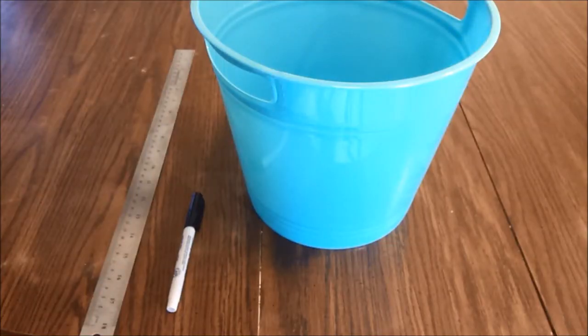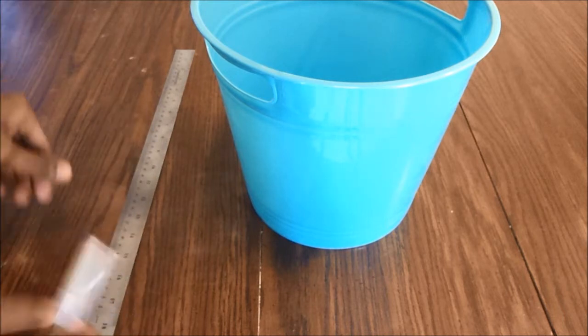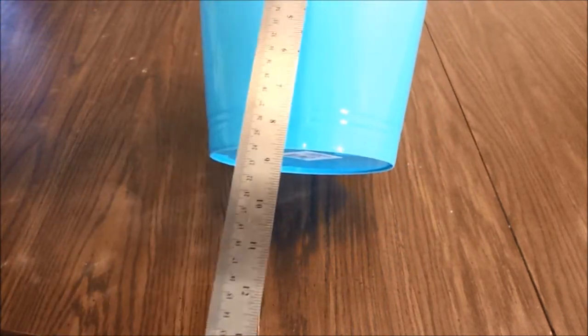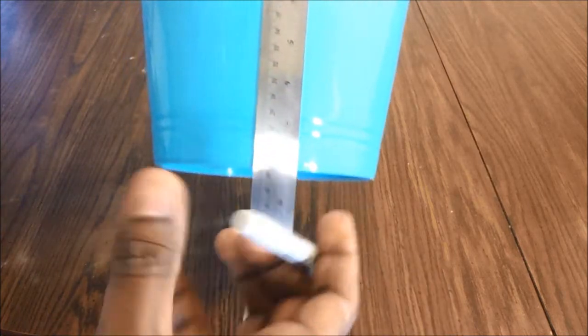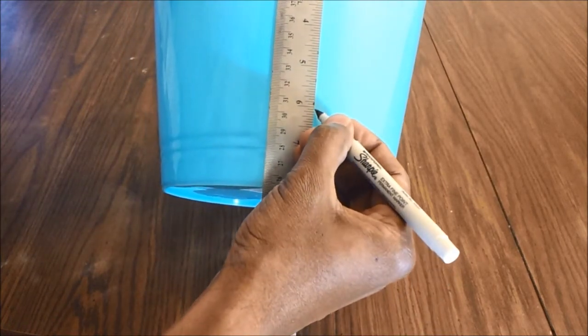This is a two gallon pail which is going to contain the plants and costs about a dollar in the dollar store. A three-fourths of an inch circular hole needs to be made in the bottom of the pail, about two inches from the edge of the bottom.